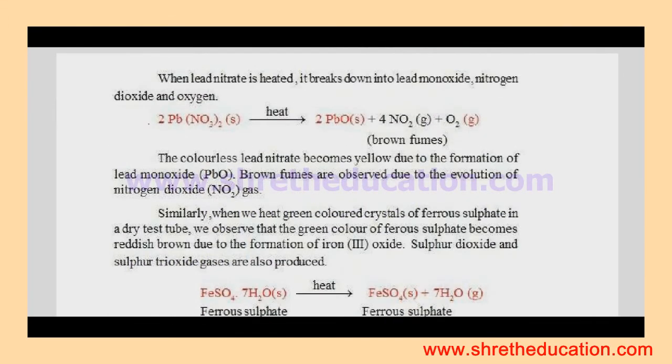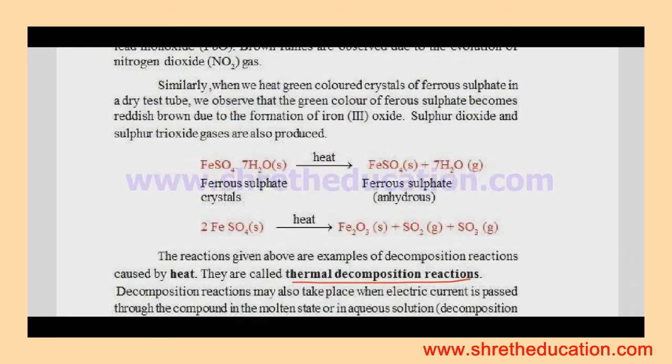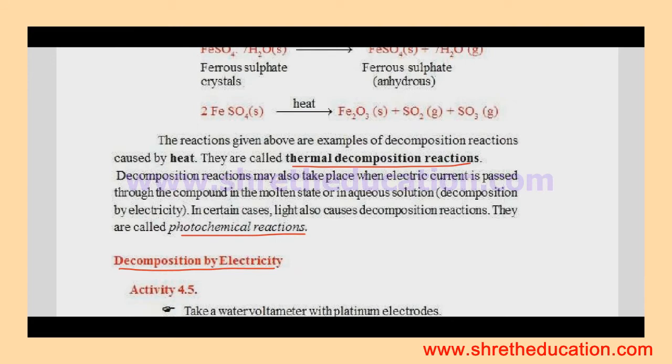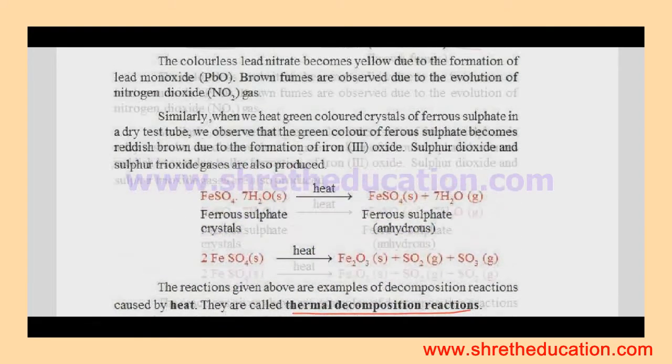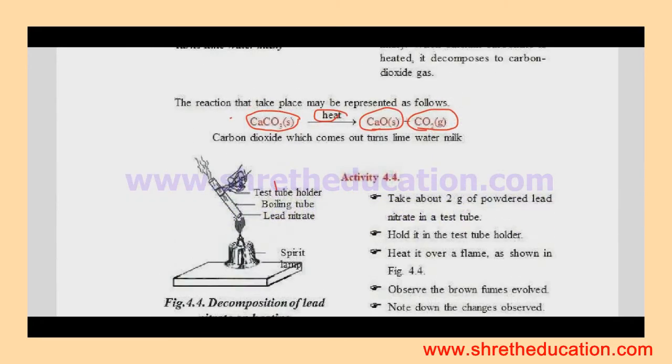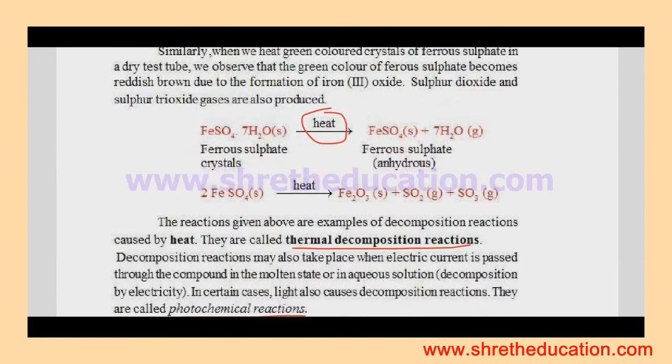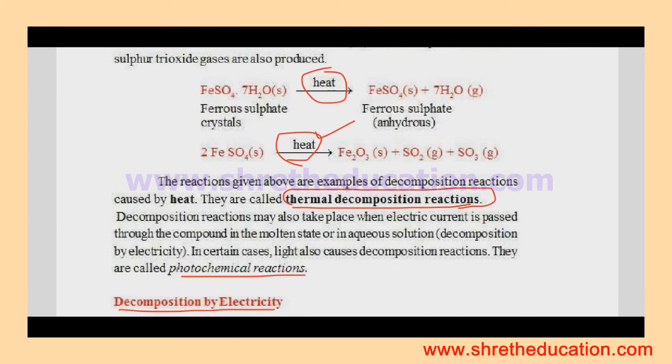Some more examples: lead nitrate forms lead oxide, nitrogen dioxide, and oxygen when heated. Iron sulfate when heated decomposes. Decomposition reactions occur by using heat, which we call thermal decomposition reactions. Thermal means heat - thermal decomposition reactions are caused by heat.